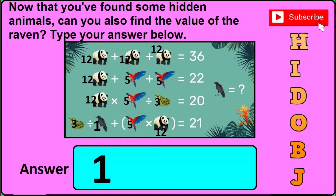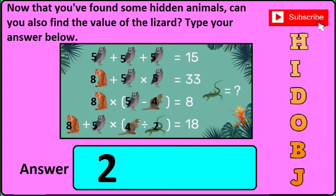In version two of this same question, it is asked: now that you have found some hidden animals, can you also find the value of the lizard? Type your answer below — so just type 1 in the answer box. In version three of this same question, it is again asked: can you also find the value of the lizard? Type your answer below. The correct answer will be 2, so just type 2 in the answer box if you find this sort of image in question number 19.